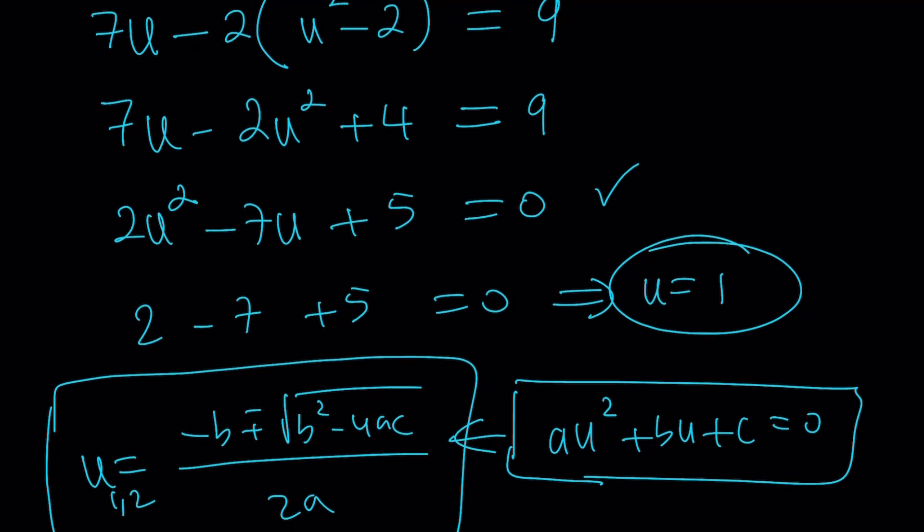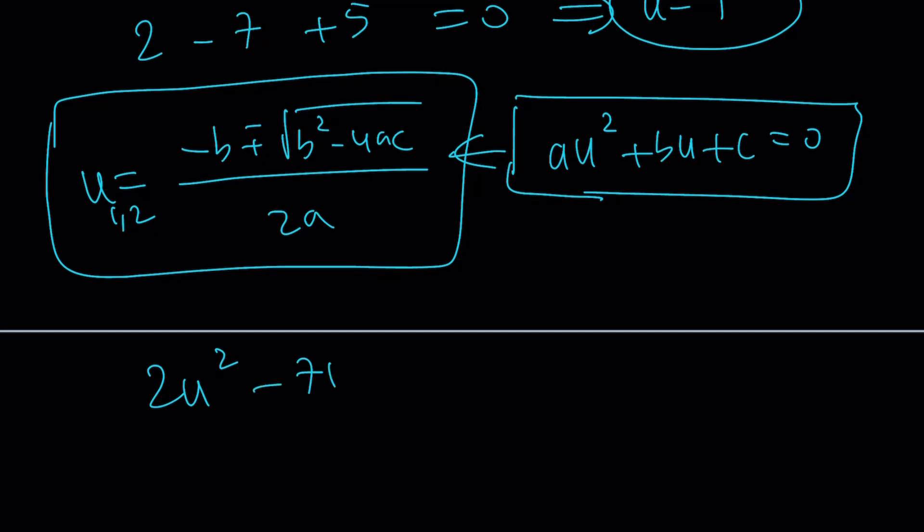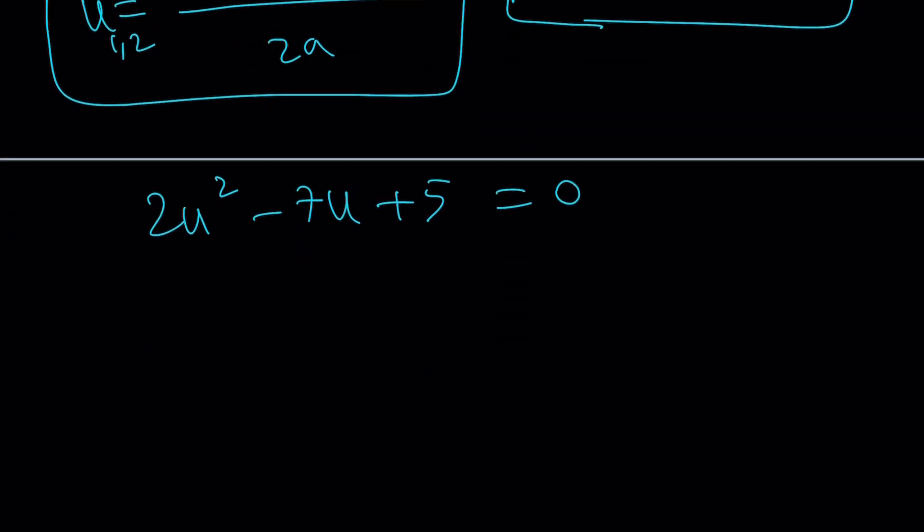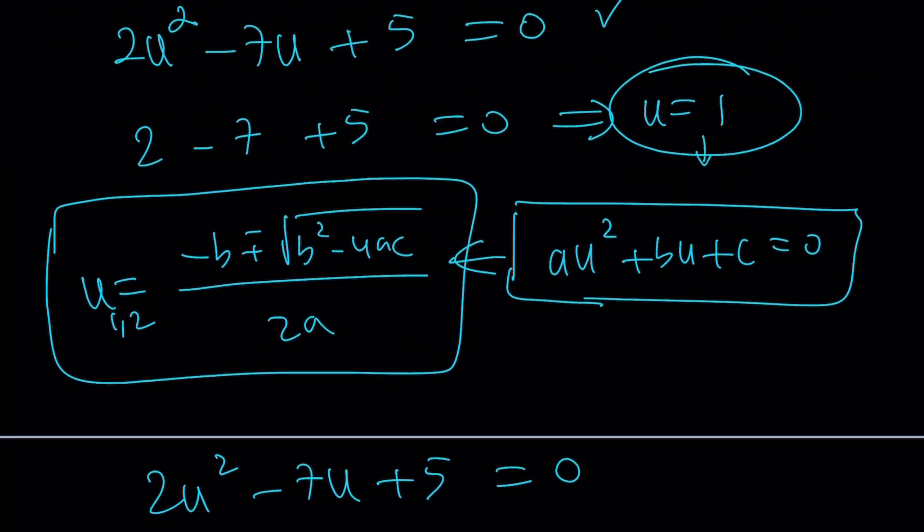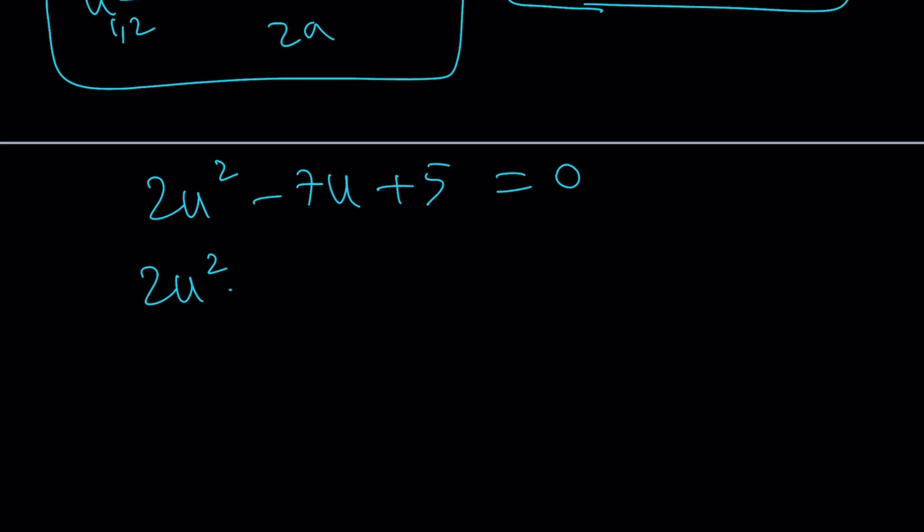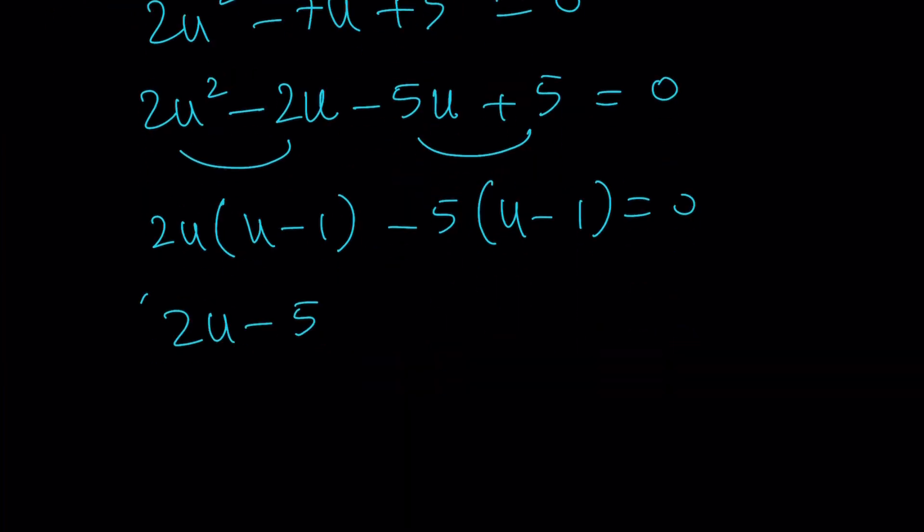Now we know u equals 1 is a solution. And how do you find the other one? You could manipulate this equation, make it factorable such that u minus 1 is a factor, because factor theorem tells us if u equals 1 is a solution, u minus 1 is a factor. So we can do the following: 2u squared minus 2u minus 5u plus 5. And notice that this is factorable by grouping. The other factor will be revealed as 2u minus 5 times u minus 1. And from here you get u equals 5 halves. So we got two solutions.